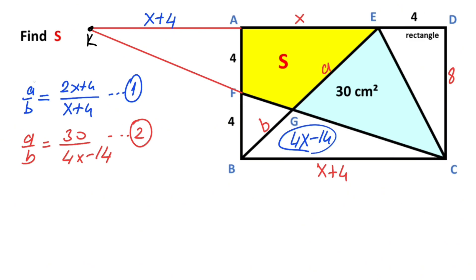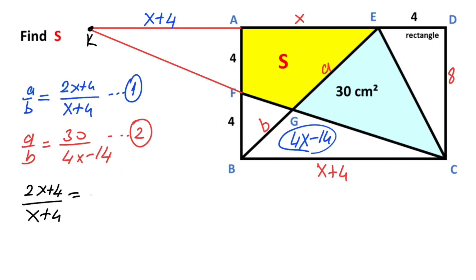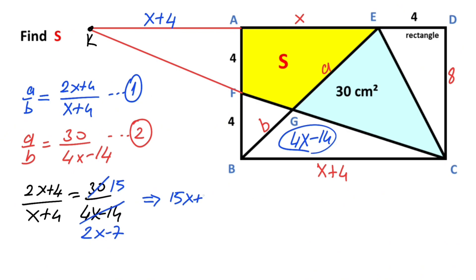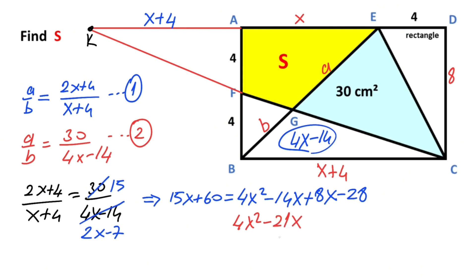If you notice that the right-hand sides of the equations are equal, that means the left-hand sides must also be equal. Therefore, equating the first and second equations: (2x plus 4) over (x plus 4) must equal 30 over (4x minus 14). After simplification and cross multiplication: 15x plus 60 equals 4x squared minus 14x plus 8x minus 20. Therefore 4x squared minus 21x minus 88 equals 0.